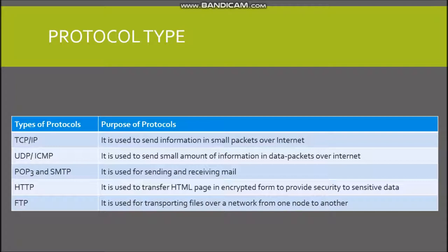The second is UDP or ICMP, which is used to send a small amount of information in data packets over the internet. The third is POP3 and SMTP, which is used for sending and receiving email. The fourth is HTTP, which is used to transfer HTML pages in encrypted form to provide security to sensitive data.